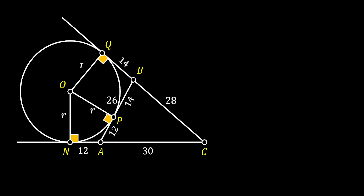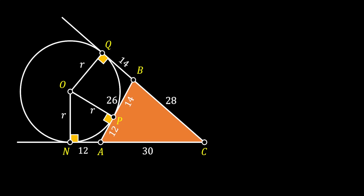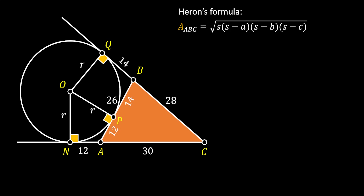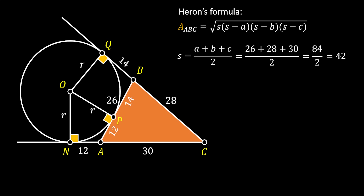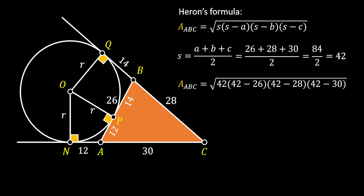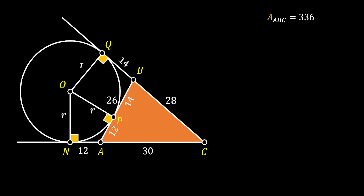Now let's find the area of triangle ABC. Since we know all the sides, we can use Heron's formula. S stands for the semi-perimeter, calculated as half the perimeter, and A, B, and C represent the sides. Substituting our sides, the semi-perimeter equals 42. Substituting all values into Heron's formula and simplifying, the area of triangle ABC equals 336 square units.